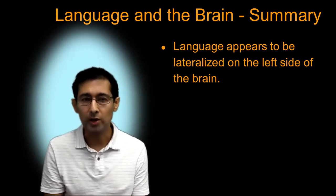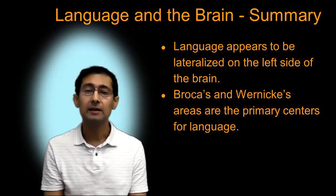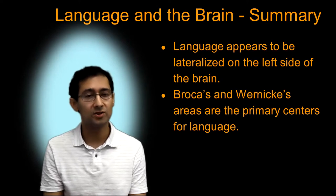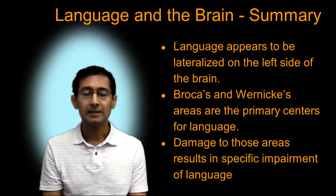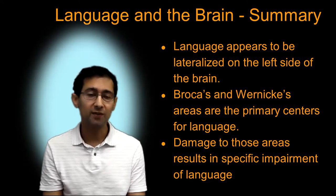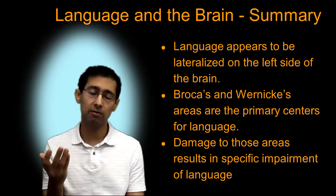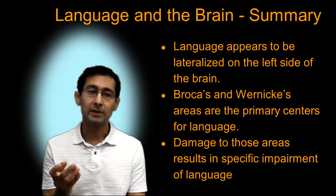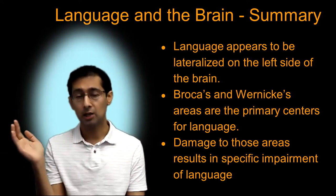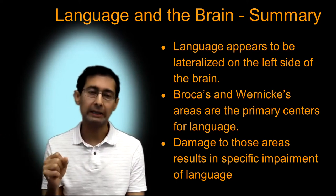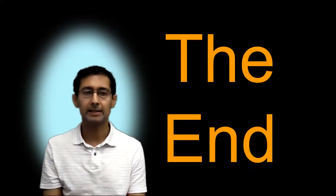So again, the answer to our question about whether language is lateralized: yes, language is lateralized on the left side. The answer to whether language is localized: yes, it's localized in Broca's area and in Wernicke's area. Damage to those areas will result in specific impairment to language. And damage to the right side, as we saw with Phineas Gage, seems to leave language intact — it affects many other aspects of personality, but it does not affect your ability to produce or understand language, which is, I guess, kind of neat.